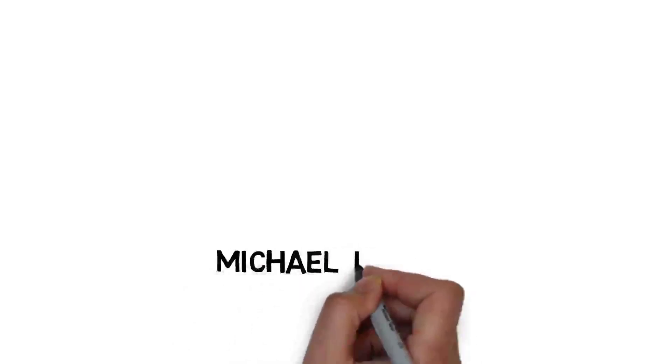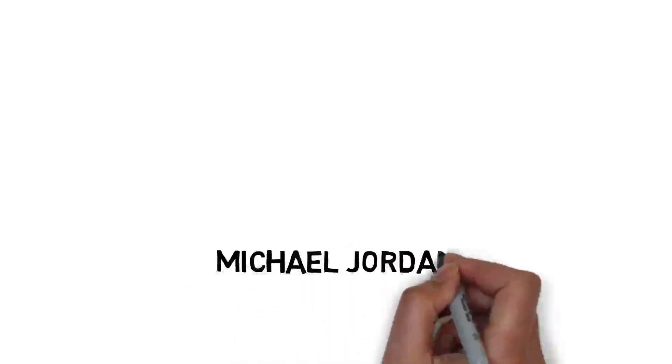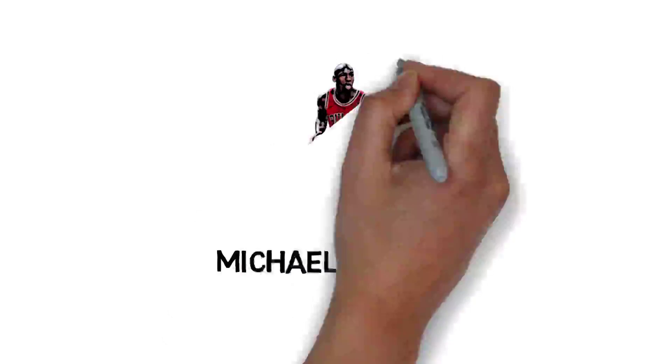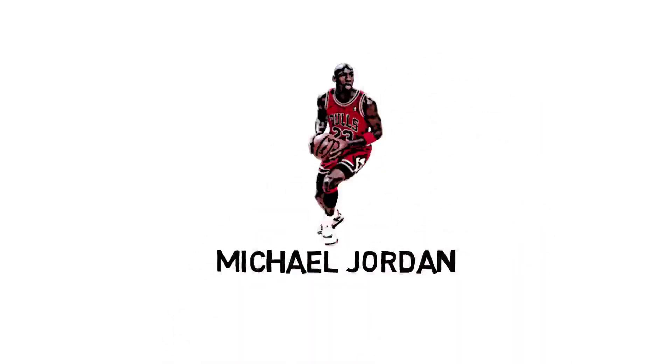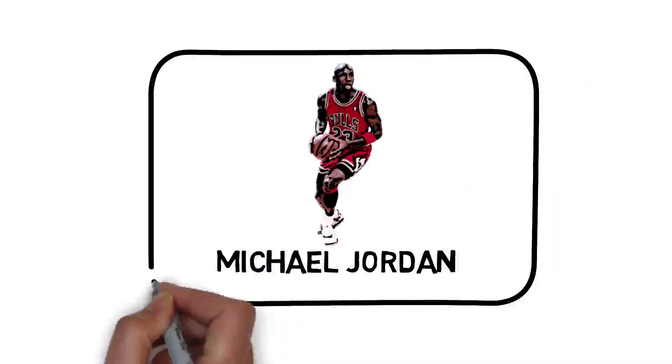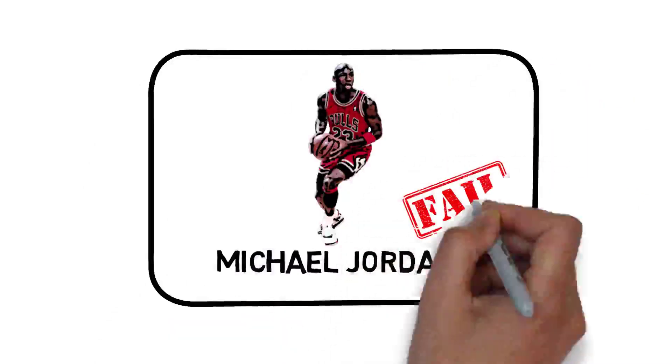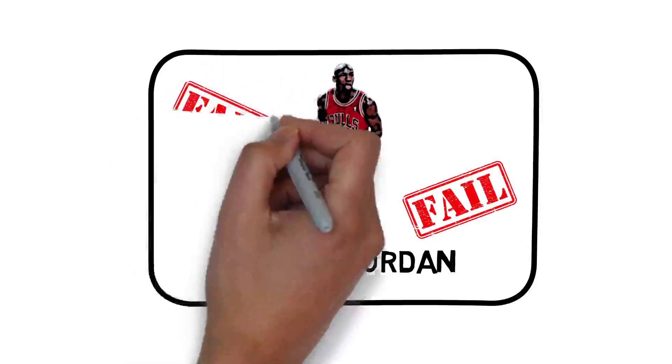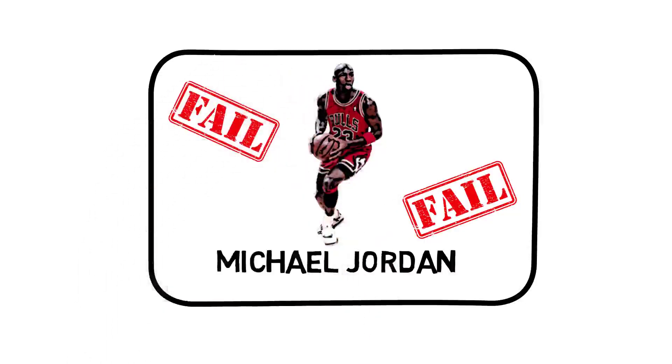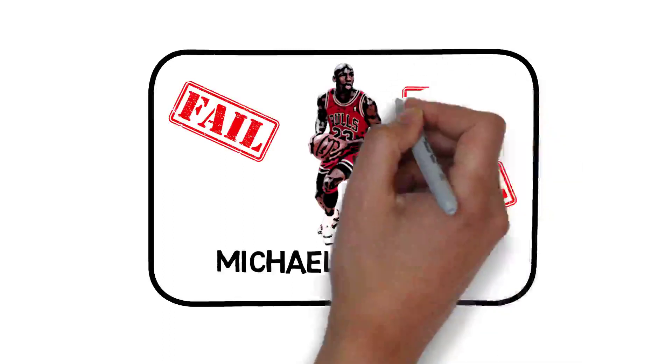Michael Jordan, probably the best basketball player ever, was not as talented as you may imagine. He was kicked out of the varsity basketball team in his high school. He was not called by the two first NBA teams that could have chosen him. When he was cut from his team, his mother's reaction was to tell him to go back there and become more disciplined.